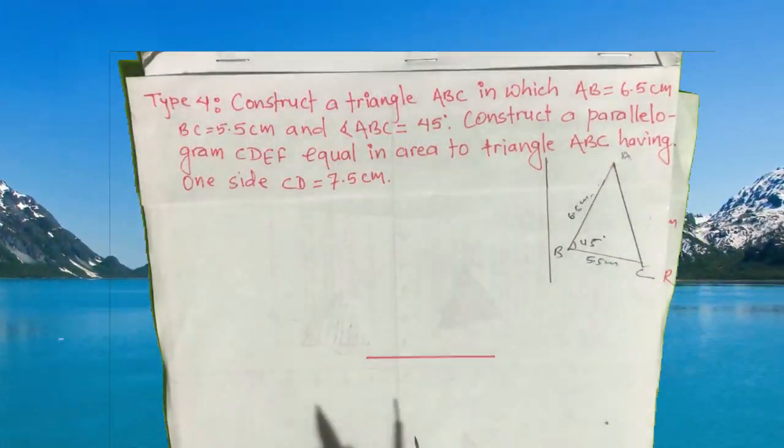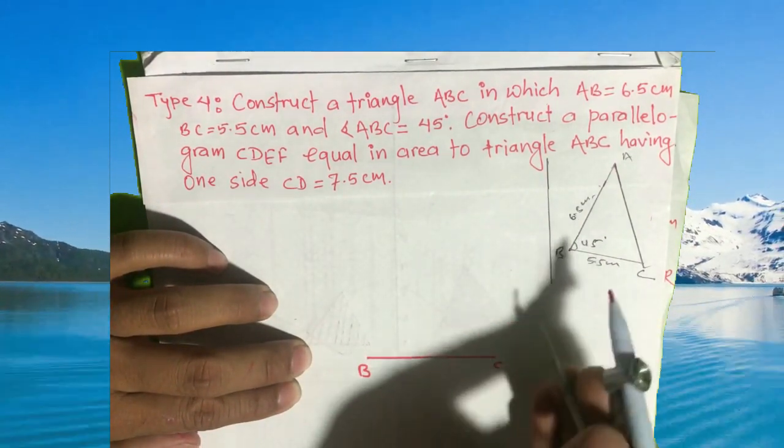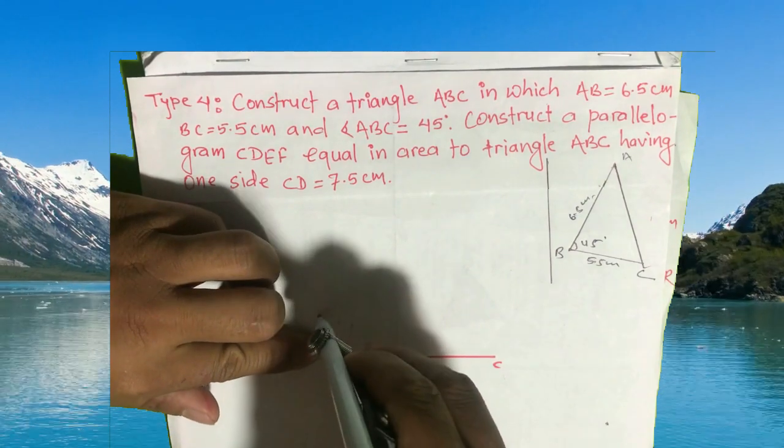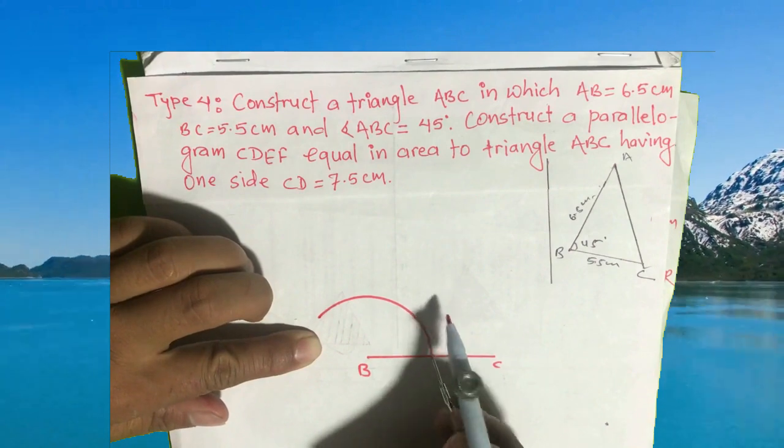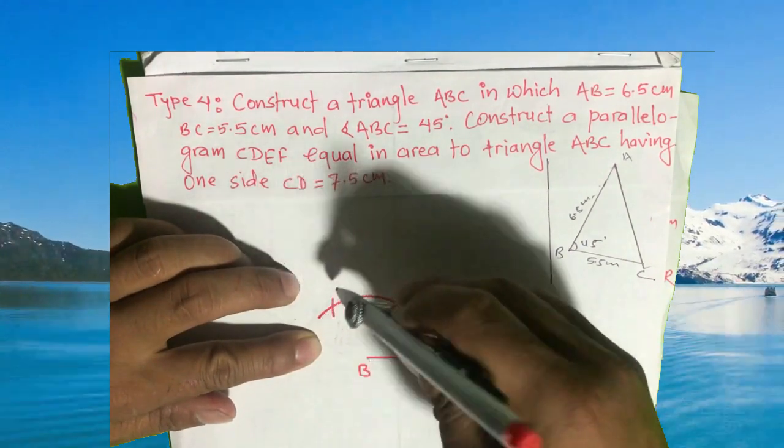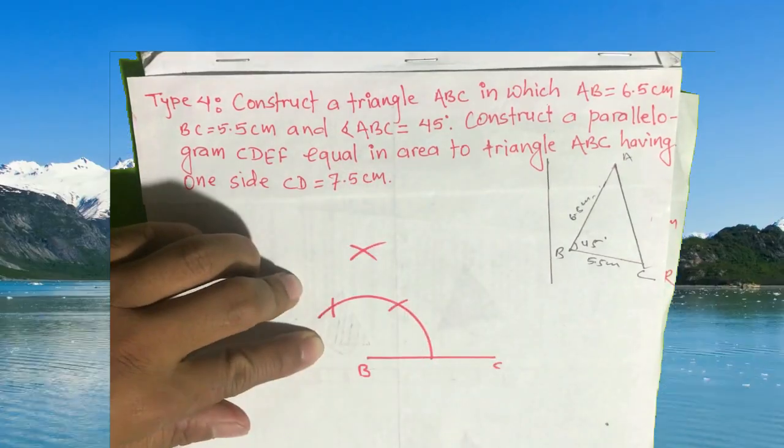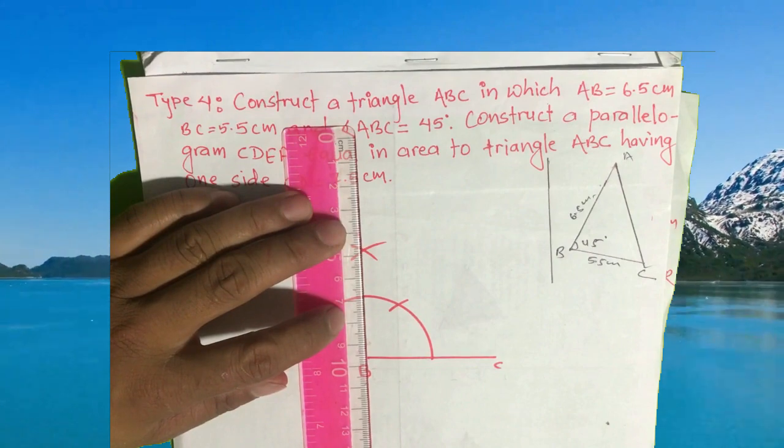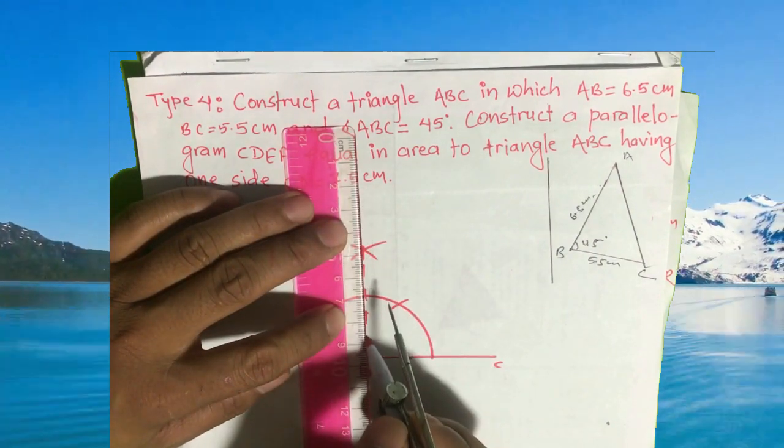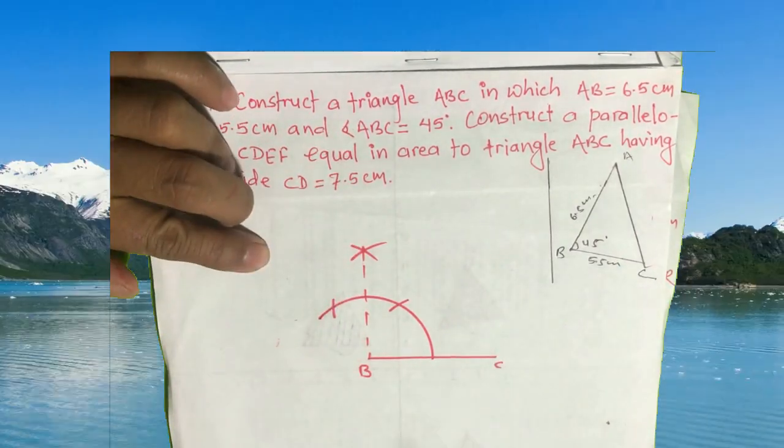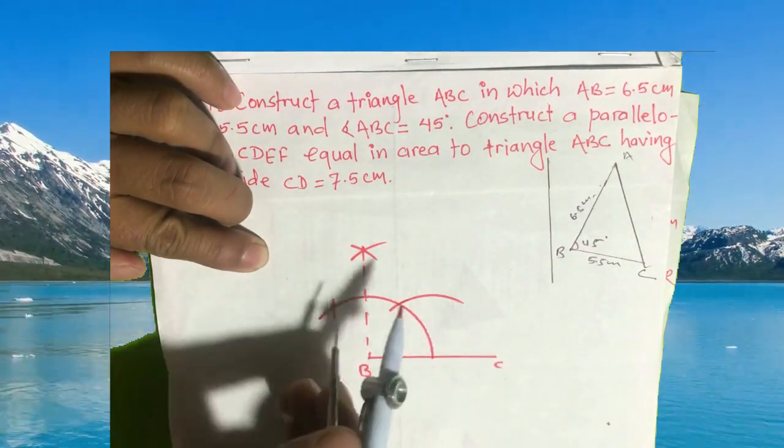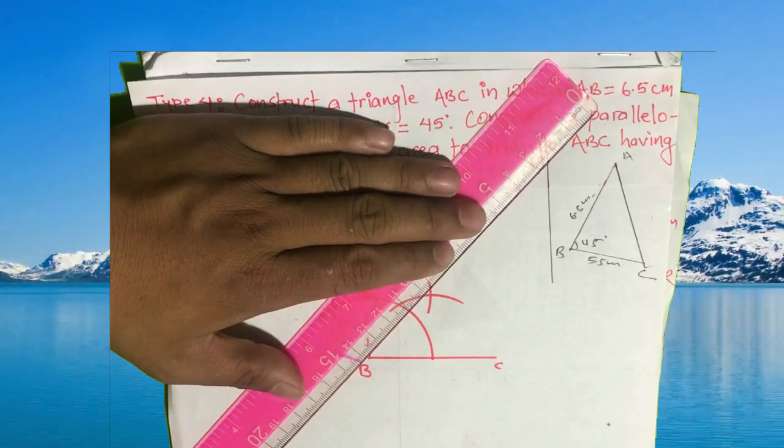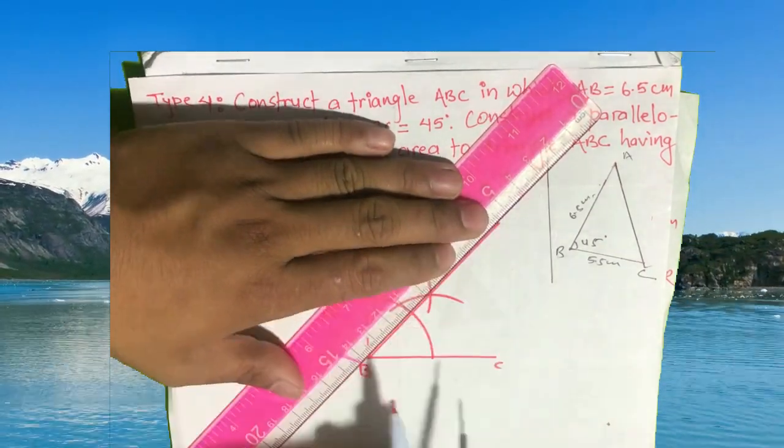This is your BC line. This is B, this is C. At point B, we need an angle of 45 degrees. Here is 60 degrees, 120 degrees. From 60 to 120 is 90 degrees. Join it by dotted line. This is 90 degrees, but we need 45 degrees, which is half of 90 degrees.